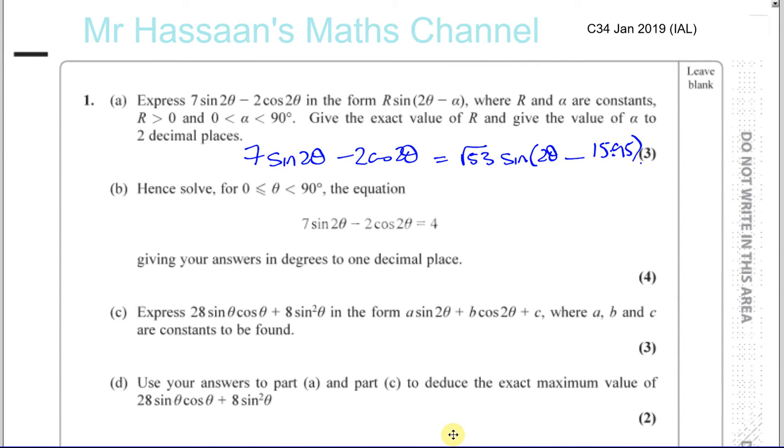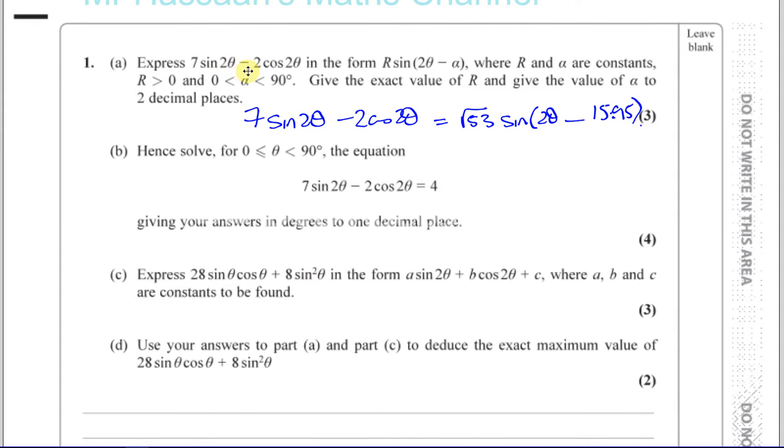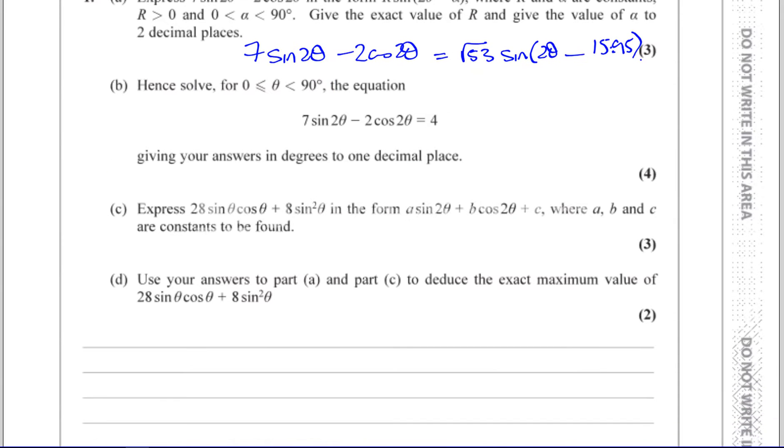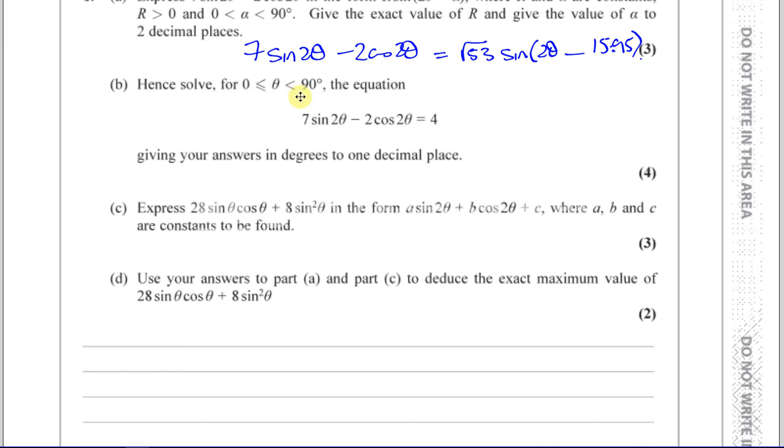Question number one part B. We finished part A where we were asked to express 7sin(2θ) - 2cos(2θ) in the form R sin(2θ - α), and we found R at √53 and α was 15.95° correct to two decimal places. Now it says hence solve for values of θ between 0 and 90 degrees, the equation 7sin(2θ) - 2cos(2θ) = 4. The reason why it says hence is because you have to use what you've done previously, and you can see that they are exactly the same.